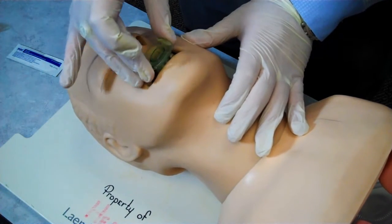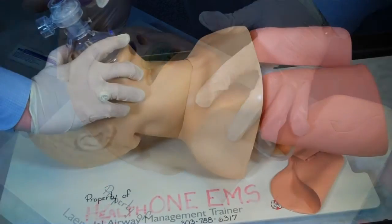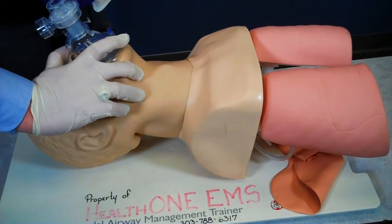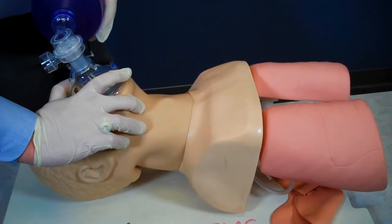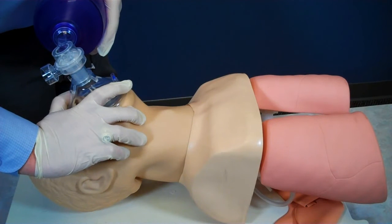Once I'm sure the patient has accepted the airway adjunct, I will ventilate the patient with a bag valve mask. When I'm sure ventilations are being performed without difficulty, I will attach the BVM to oxygen and set the flow rate to 12 to 15 liters per minute.